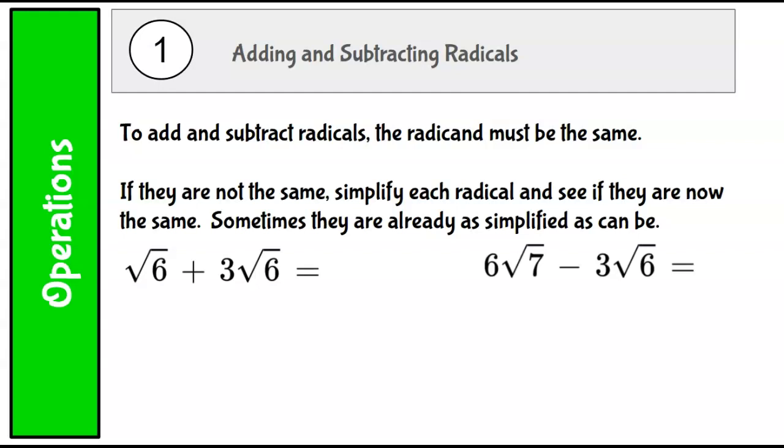To add and subtract radicals, the radicand, remember that's the number under the radical symbol, must be the same. If they're not the same, you can simplify each radical and see if they are now the same, and sometimes they are already simplified as they are.